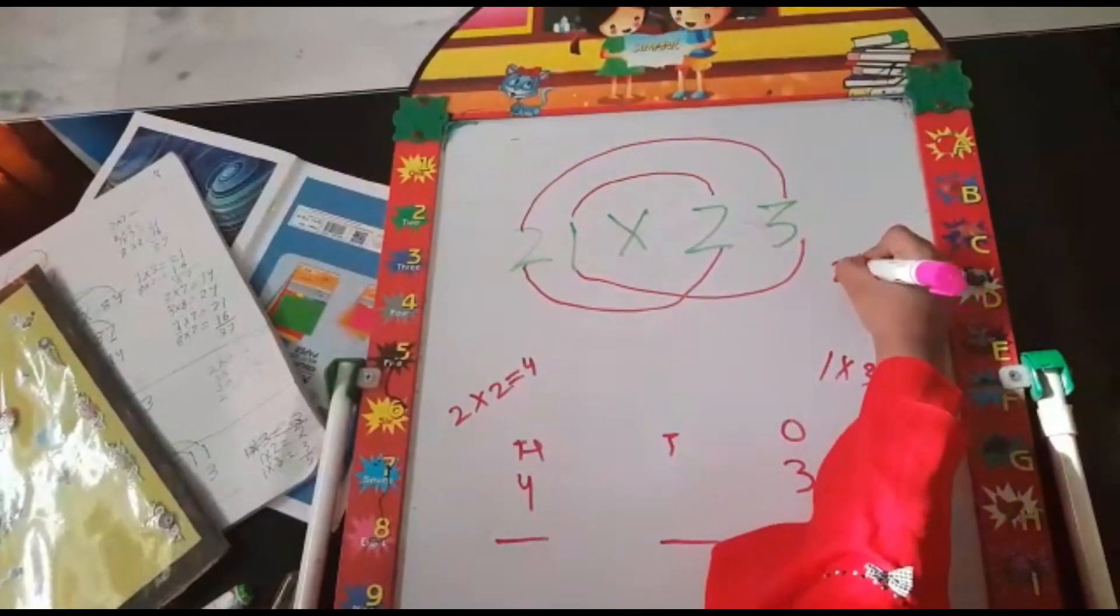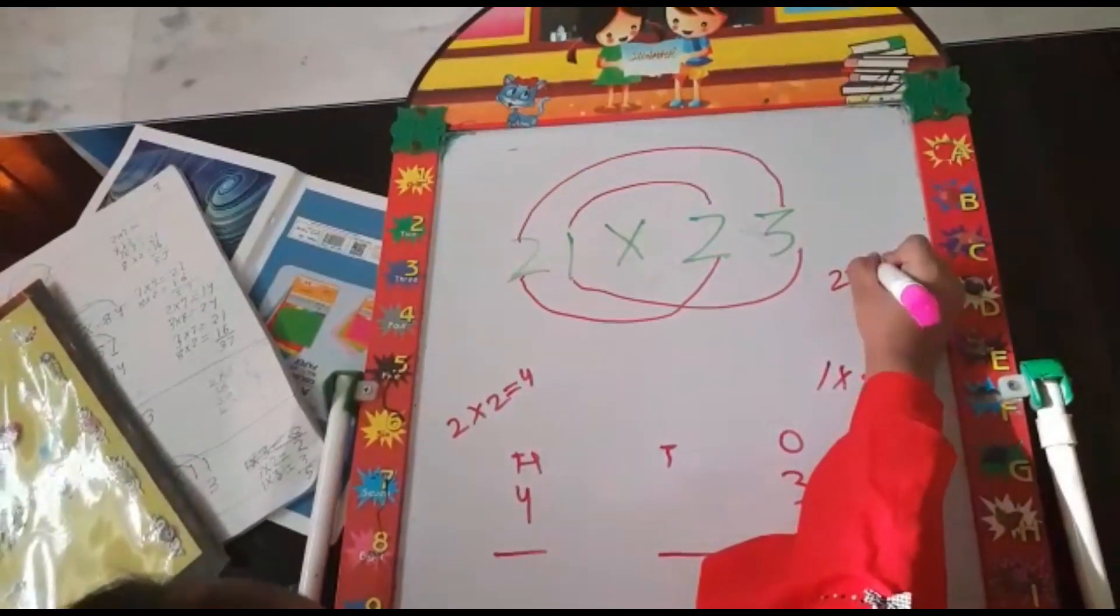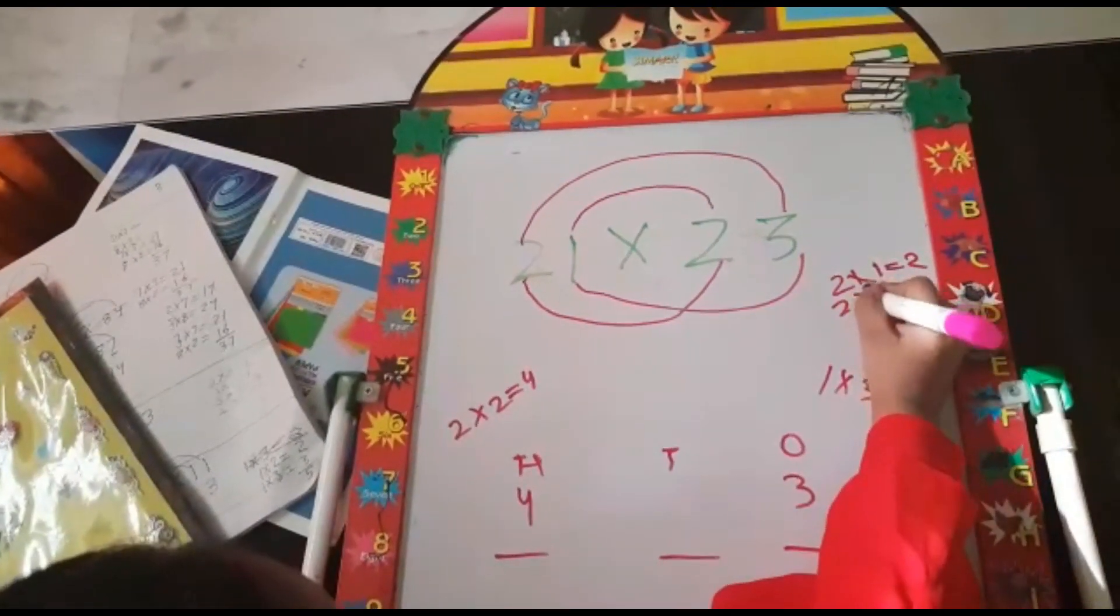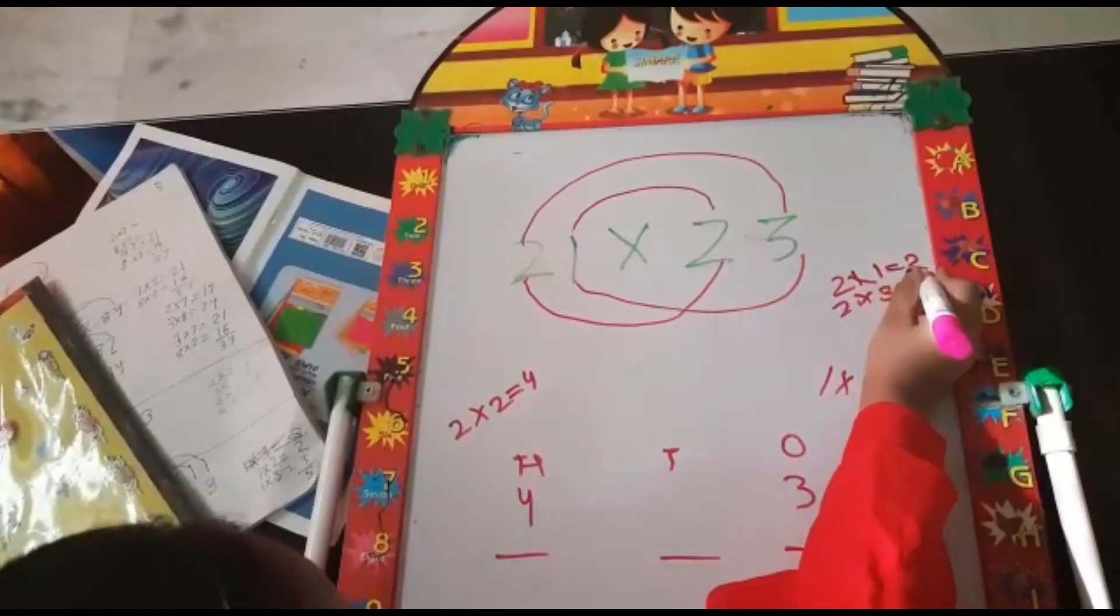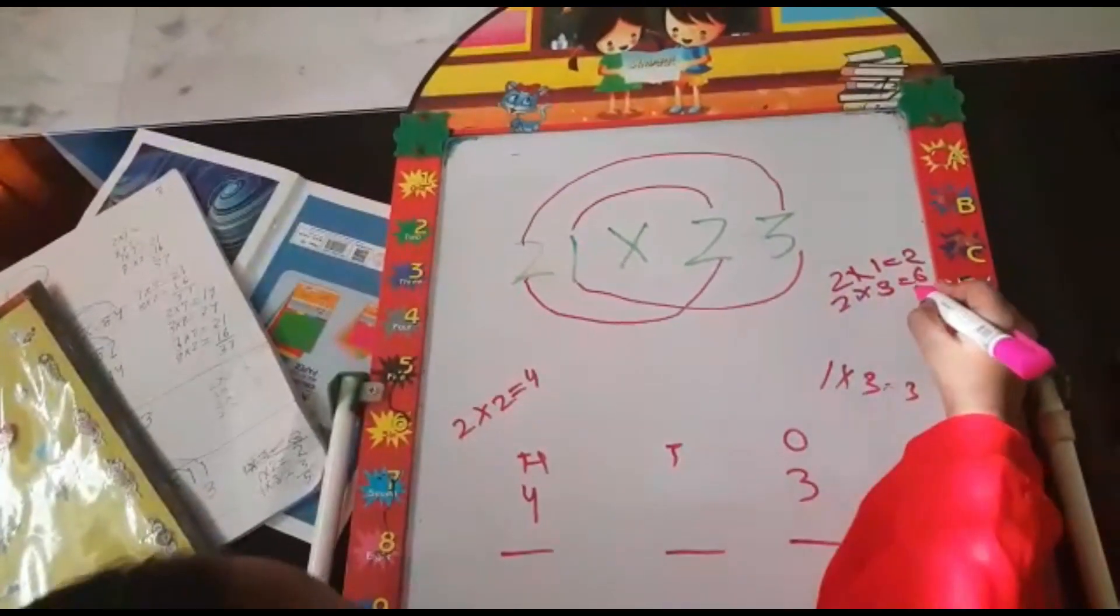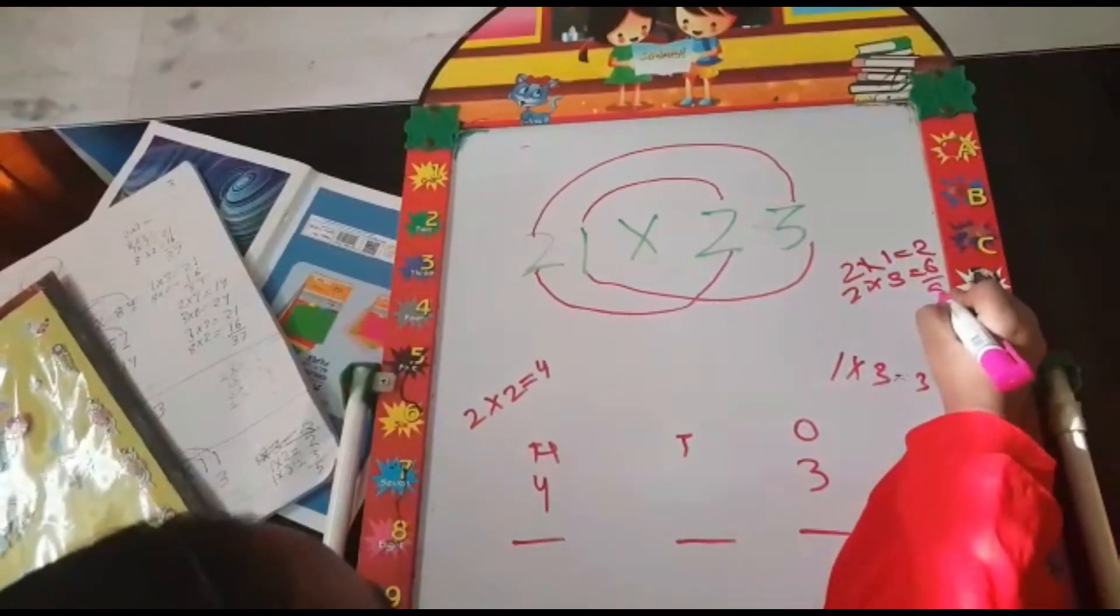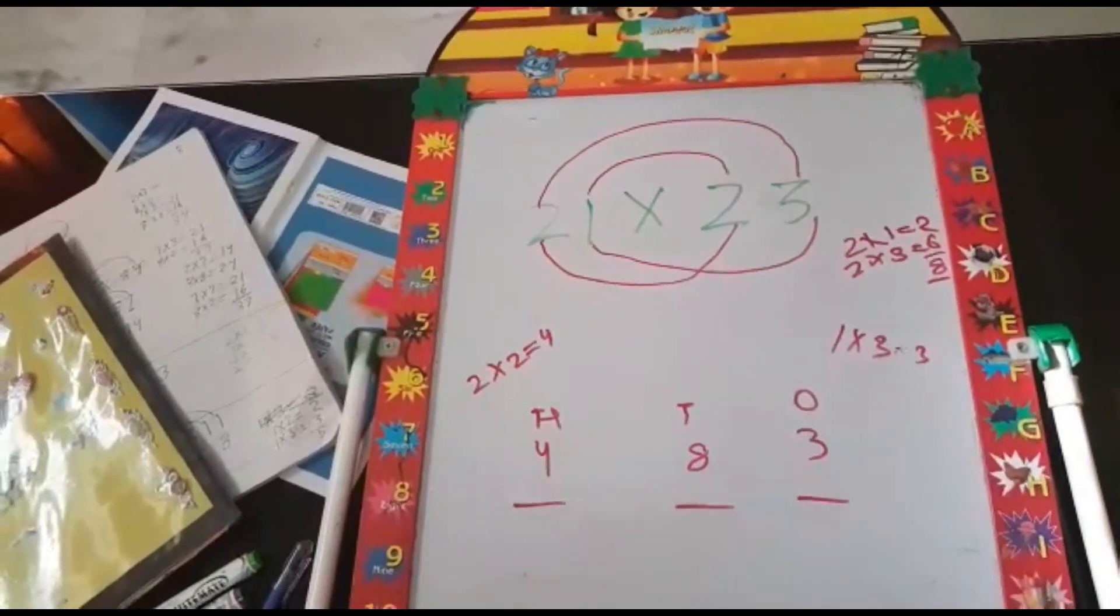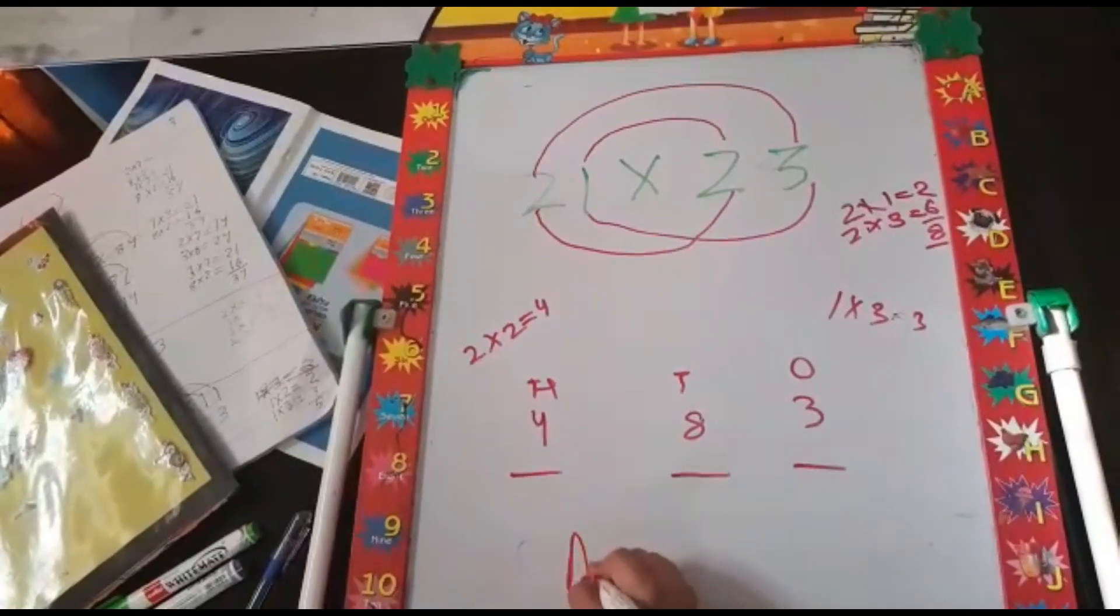1 into 2 that is 2 and 2 into 3 that is 6. Both of these digits will be added to get our digit in the middle that is 8. So our answer is 483.